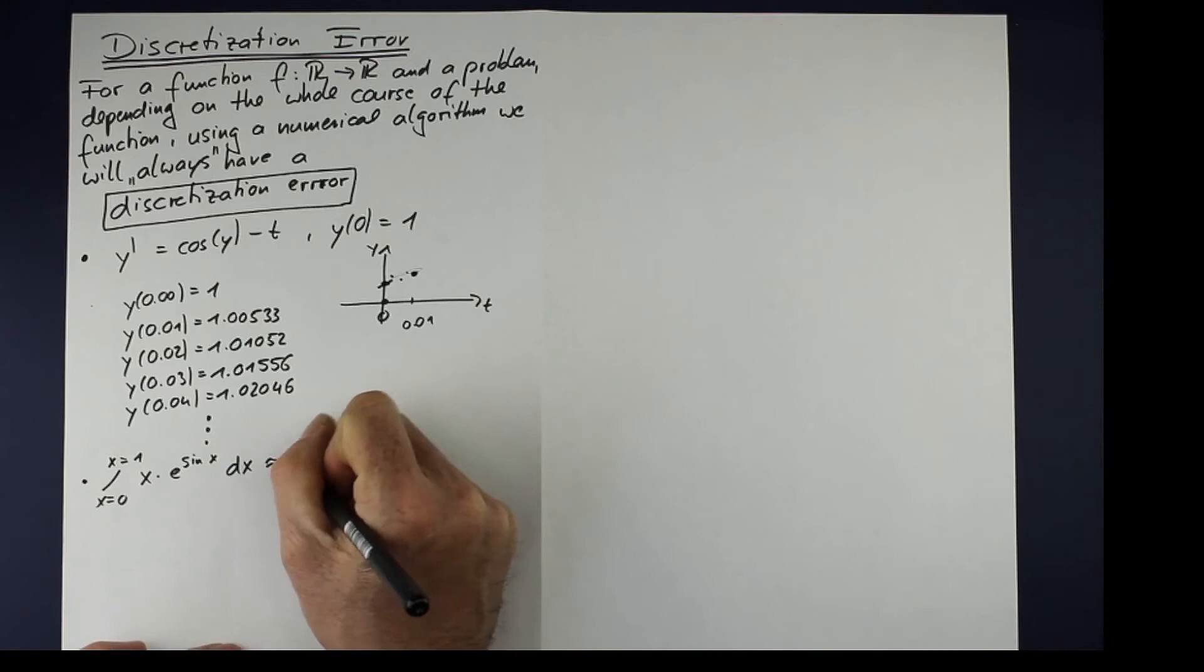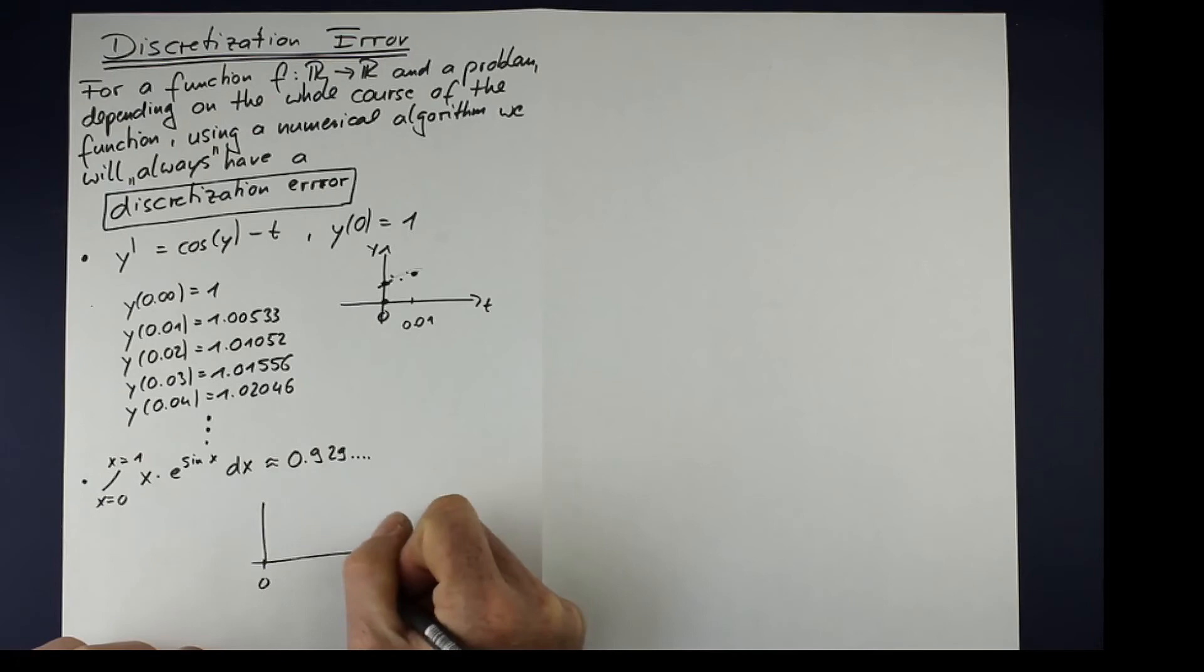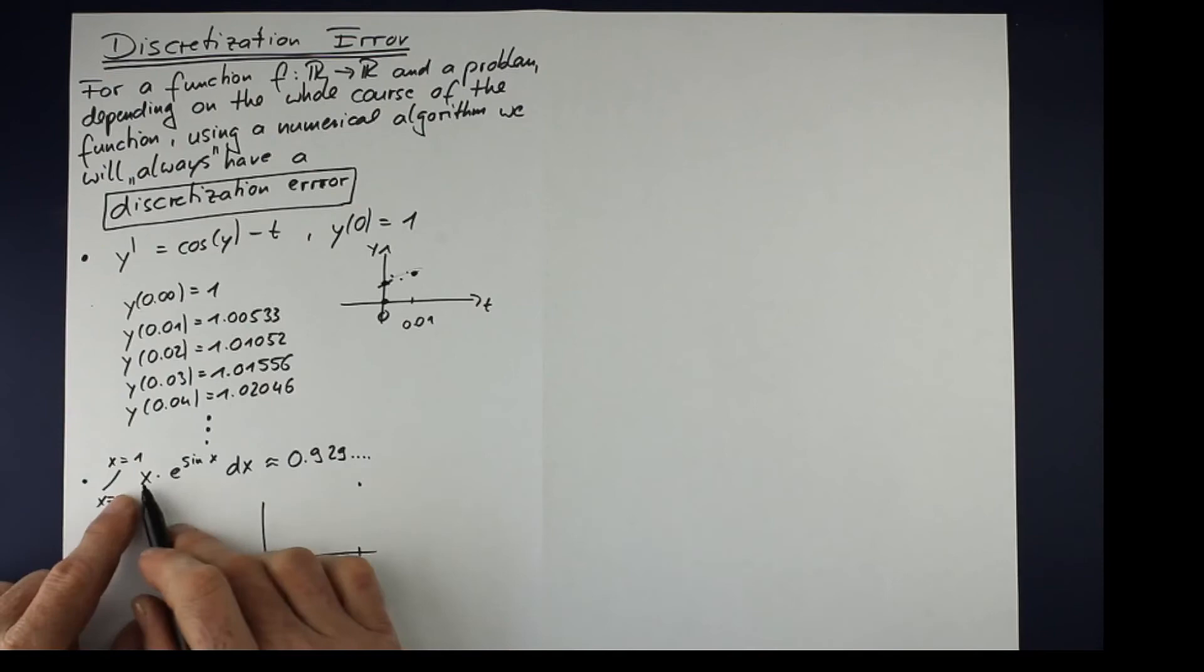And so we need a numerical solver. And in this case, the answer will be 0.929 and some digits following. And how is this answer produced? So we can evaluate this function. It's 0 at 0.0. And at 1, it's 1 times e to the sine 1.